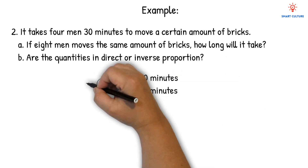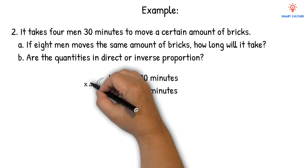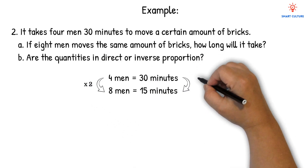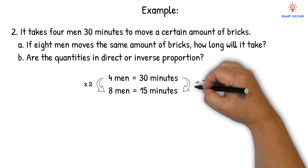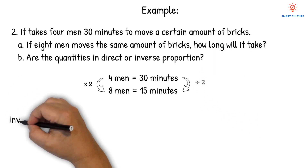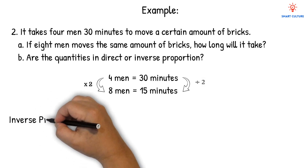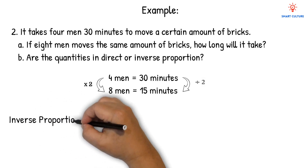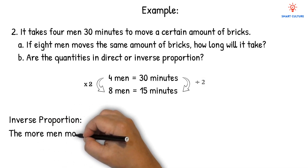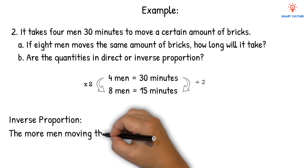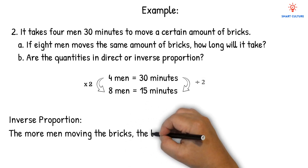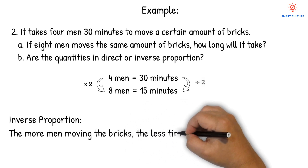From 4 men to 8 men, we've multiplied by 2. But on the other side, from 30 minutes to 15 minutes, we've divided by 2. So is this direct or inverse proportion? This will be inverse proportion, because on the one side we've multiplied by 2 and on the other side we've divided by 2. The more men moving the bricks, the less time it will take.